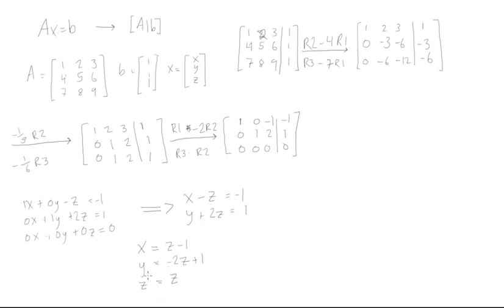This is the answer, this is the solution to Ax equals b in parametric form. And if we want to write this in vector form, we can say that x, y, z, which is our vector x, is equal to the vector z minus 1, minus 2z plus 1, and z.